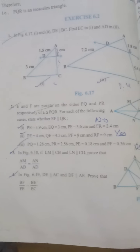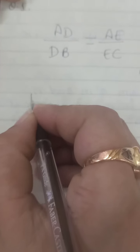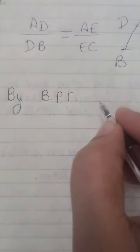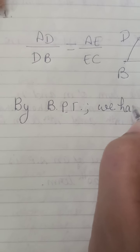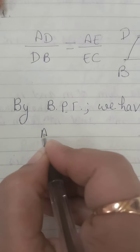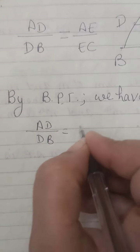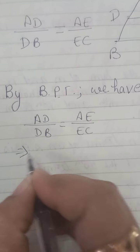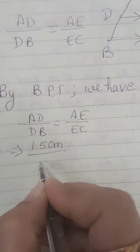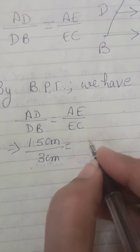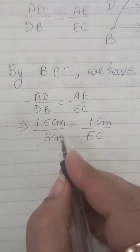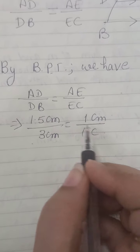We will apply the basic proportionality theorem. By BPT or theorem 6.1, we have AD upon DB is equal to AE upon EC. So, what is AD? 1.5 cm. DB? 3 cm. AE? 1 cm. And EC we need to find.